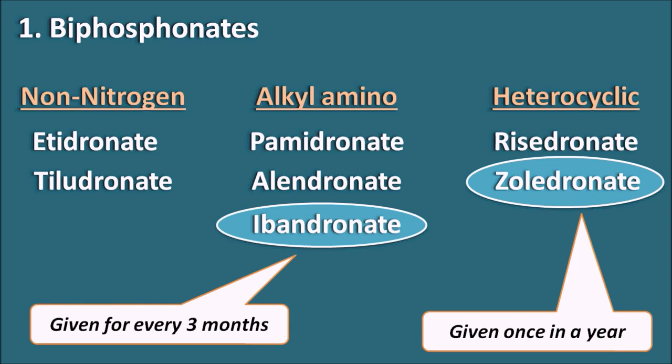All bisphosphonates share a common side effect of esophageal ulcers. When these drugs are given, the patient must be in an upright position to prevent reflux of the drug into the esophagus. Food also decreases the absorption of bisphosphonates, so these drugs should be given 30 minutes before food intake.